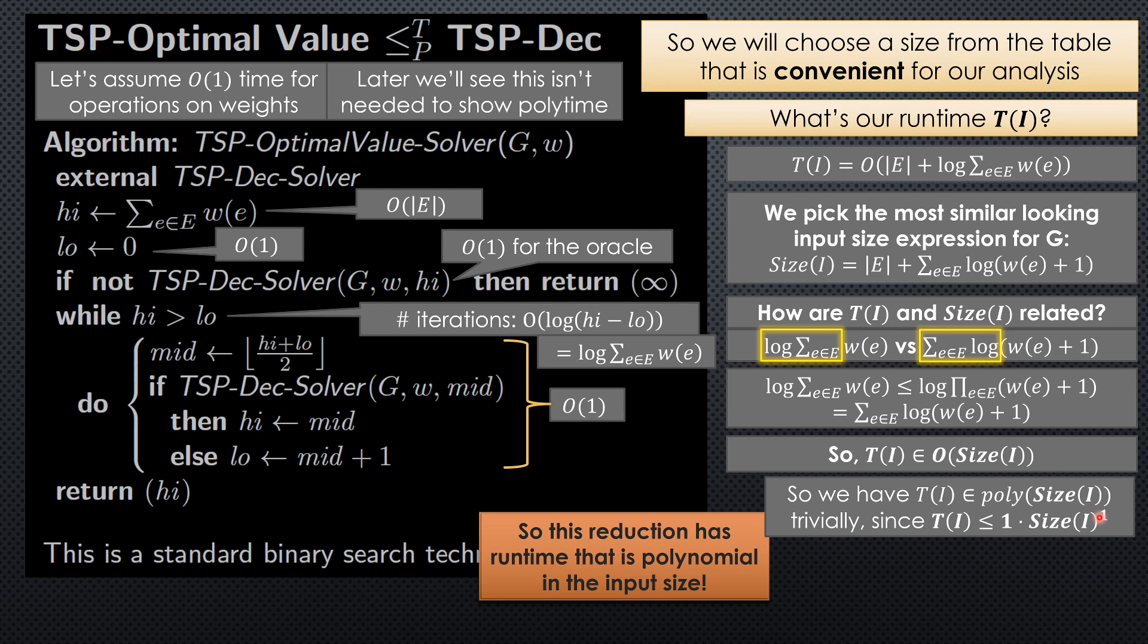So this reduction does have polynomial time in the input size. The trick is we had to be a little bit careful to avoid this nasty loophole, where if I didn't have this plus one, then any weight that was one, log of one would be zero, and we'd be saying we're using zero bits to write down that weight, which is not correct, and because of that, we failed to show that the T(i) expression was less than or equal to constant times, or less than or equal to a polynomial function of the size(i) expression.